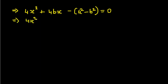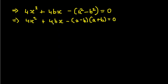The equation is 4x² + 4bx minus (a minus b)(a plus b). Now look at the middle term — 4bx is there, so b is present but a is not. For splitting and taking out common, you need a also. So what you can do: write 4bx as 2bx plus 2bx.